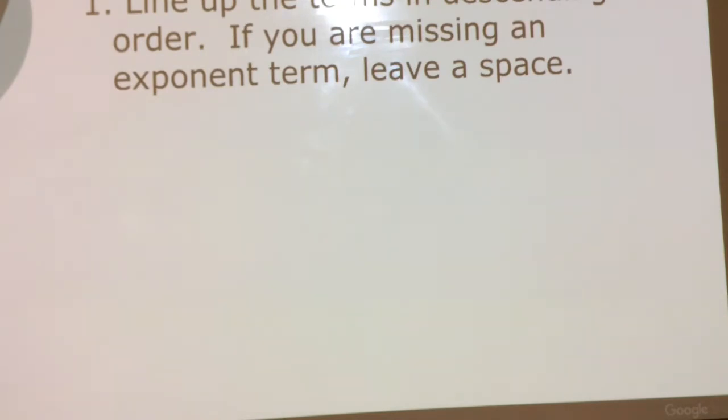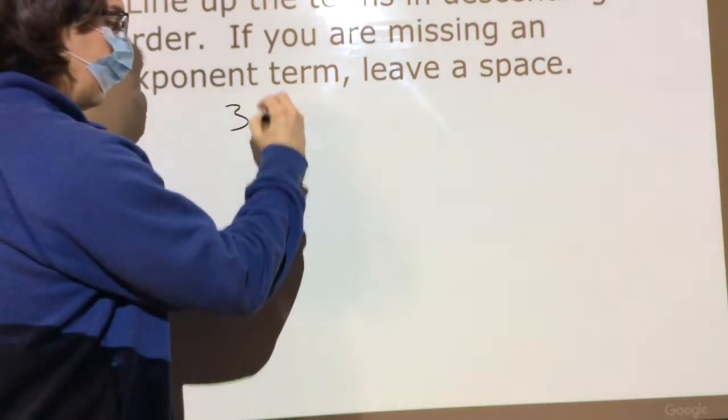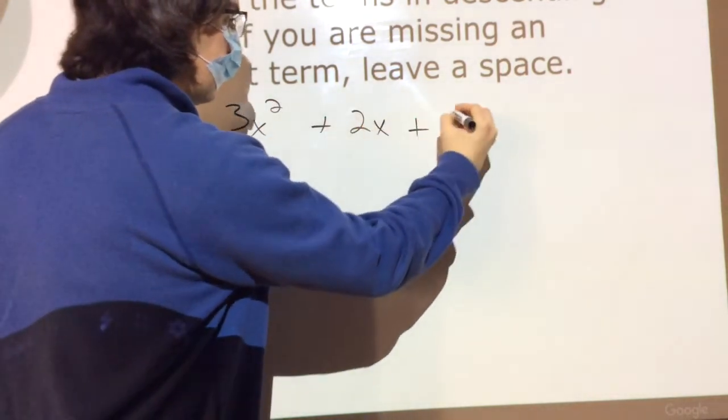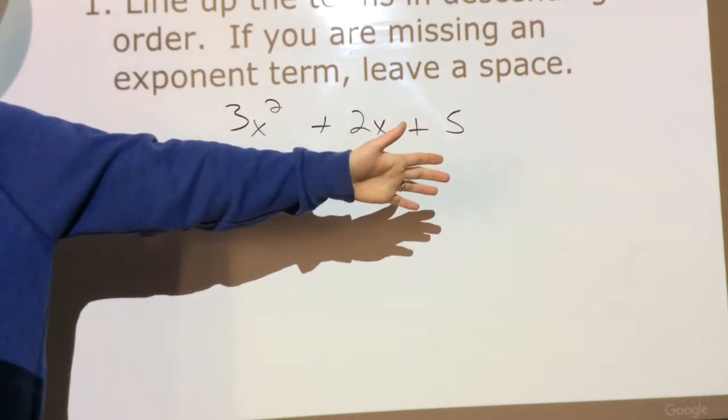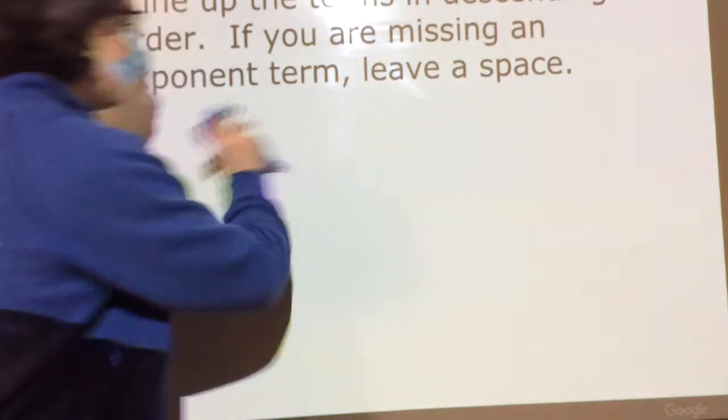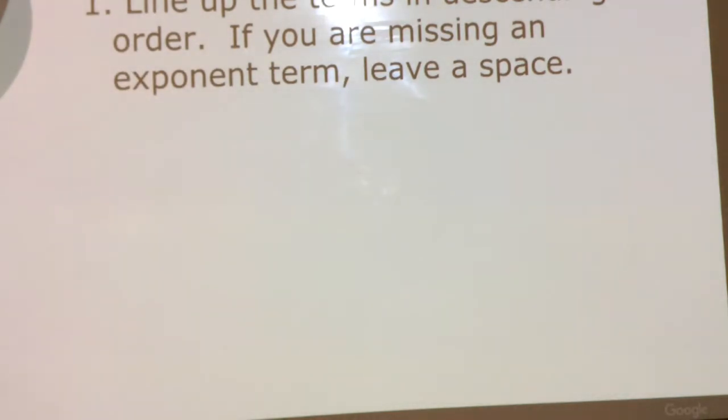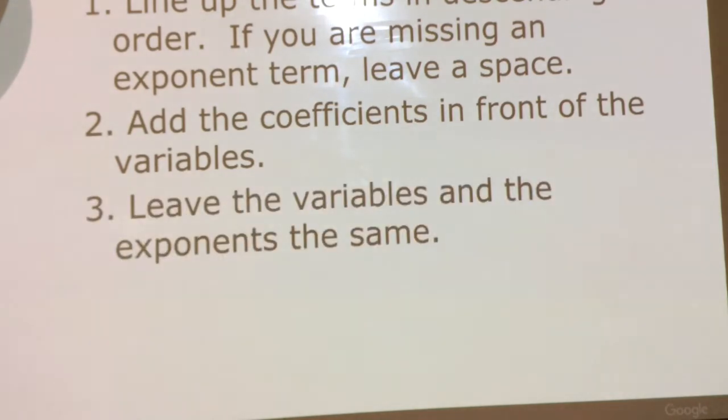This says line up the terms in descending order. What does it mean if I say something is in descending order? I'm really going to list my numbers out from the biggest exponent. For instance, 3x squared plus 2x plus 5. As far as the degrees go, our degree of 2, our degree of 1, and our degree of 0. Descending order from greatest exponent to least exponent. We're going to add the coefficients. The coefficient is the number in front of the variable. We'll add that together.